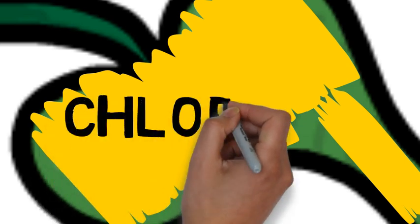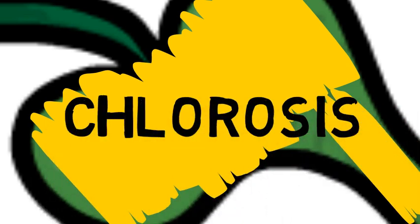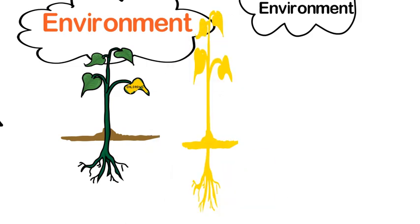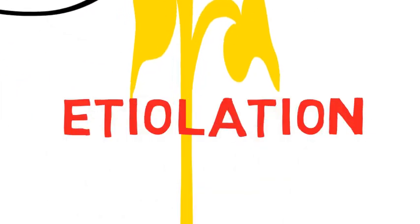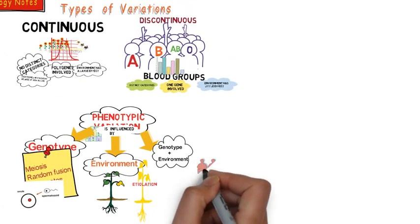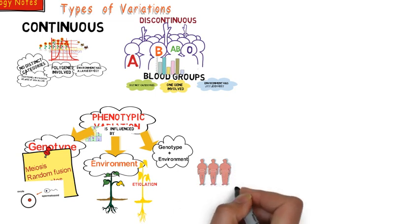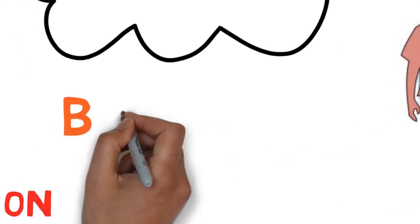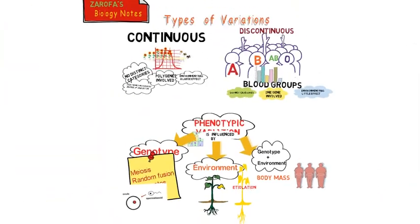In other cases the plants allowed to grow in the darkness suffer from etiolation. Finally with both genotype and environment, body mass can be affected.